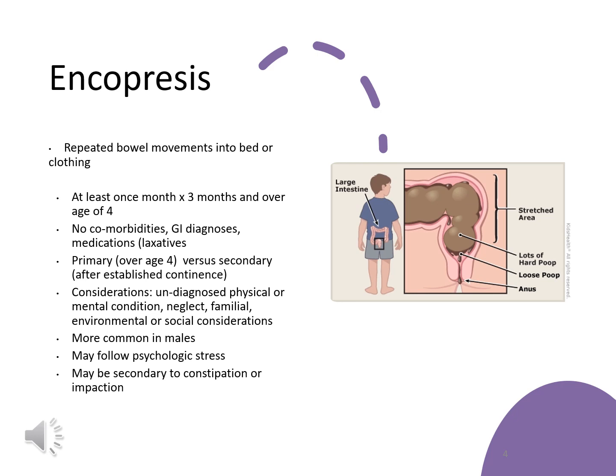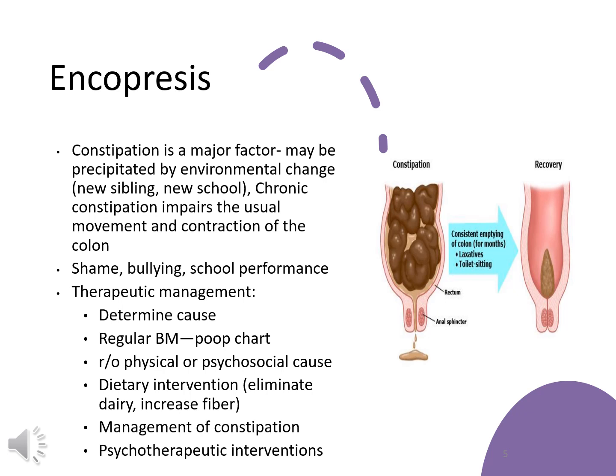The most important thing is keeping them on a regular schedule. Constipation can be a major factor because it impairs the normal movement and contraction of the colon, affecting their ability to evacuate completely. There is also a lot of bullying that can be involved with children who have stool accidents, so we need to determine the cause and get them on a regular routine.